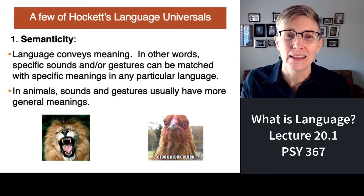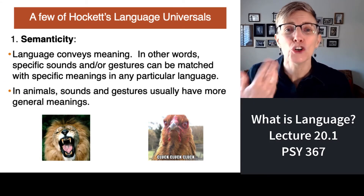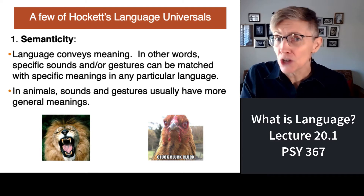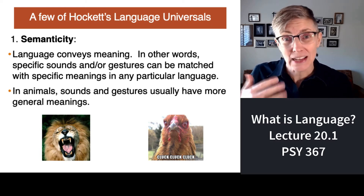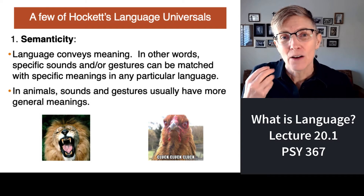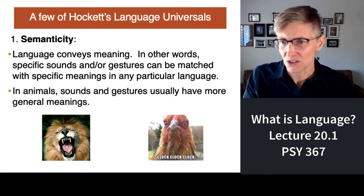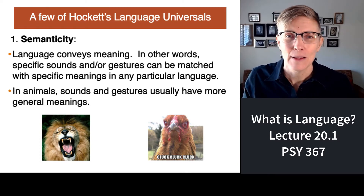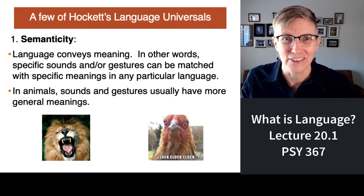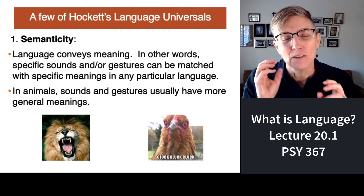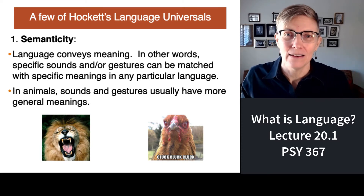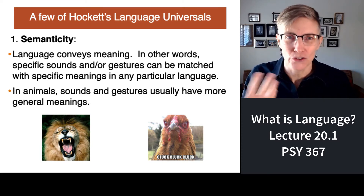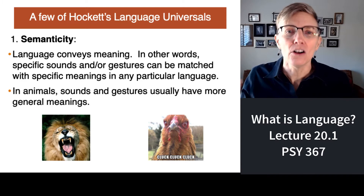One universal is meaning. Words have meaning, but when your dog barks and your cat meows, those sounds have meaning too. Animal noises — like a chicken saying cluck, cluck, cluck — are used for a lot of different things, so an animal sound is even more ambiguous than a human word or sign, but they all carry meaning.